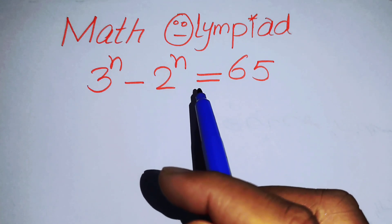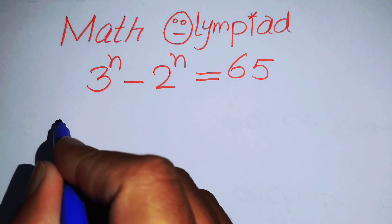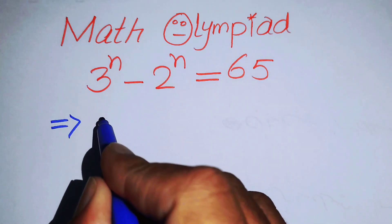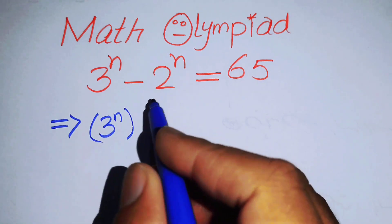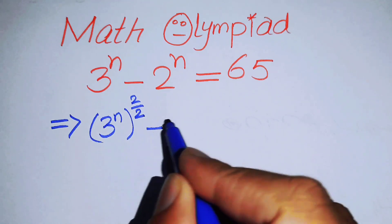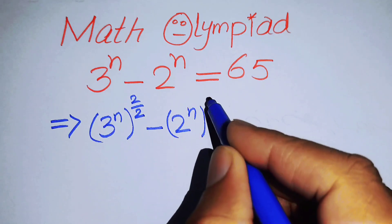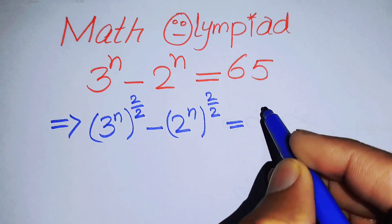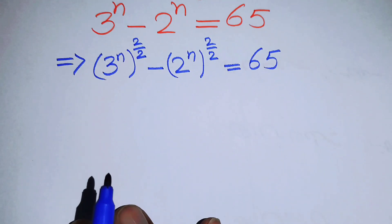We will solve this problem for the values of n. The very first thing we are going to do is rewrite this equation. We take 3 to the power of n and multiply and divide the exponent by 2, and similarly for 2 to the power of n, writing the exponent as n over 2 times 2. This whole equation equals 65.